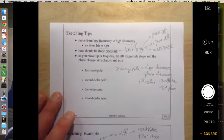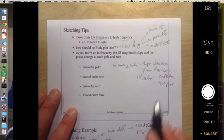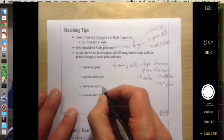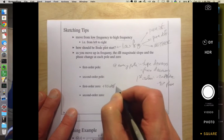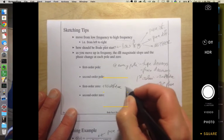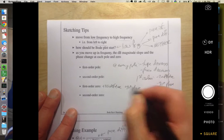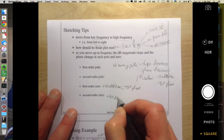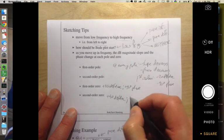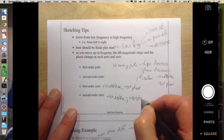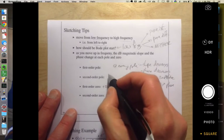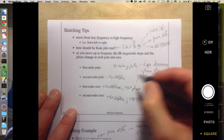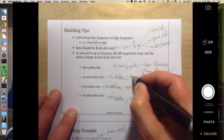For second order, it would be minus 40 and minus 180. For a zero, we'd be talking about plus 20 dB per decade on the slope and plus 90 degrees for phase. For a second order zero, plus 40 dB per decade on the slope and plus 180 degrees on the phase. For a second order pole, minus 40 dB per decade on the slope and minus 180 on the phase.